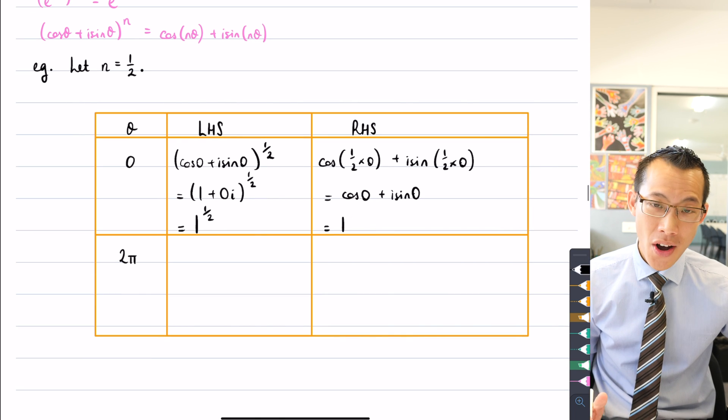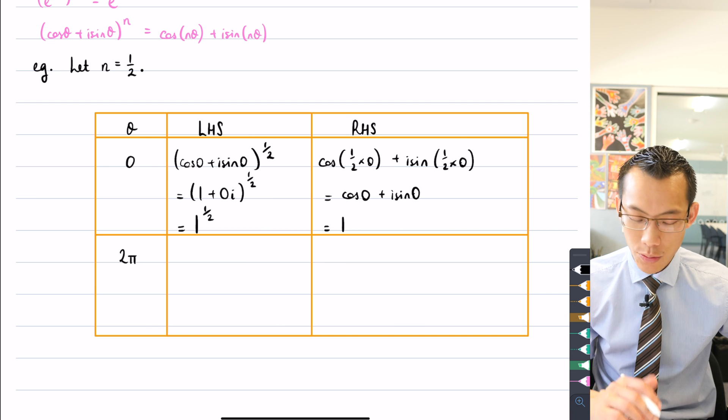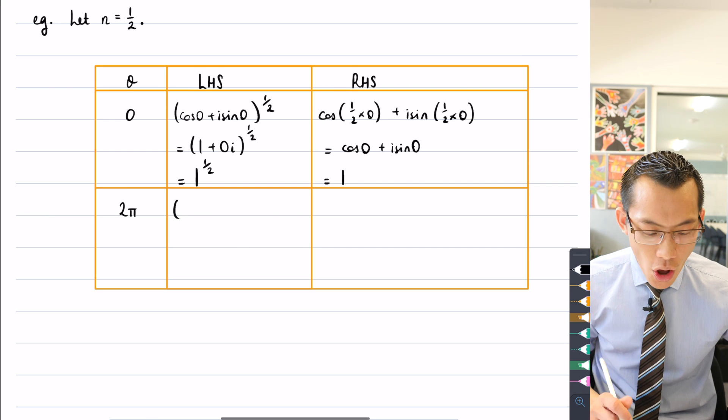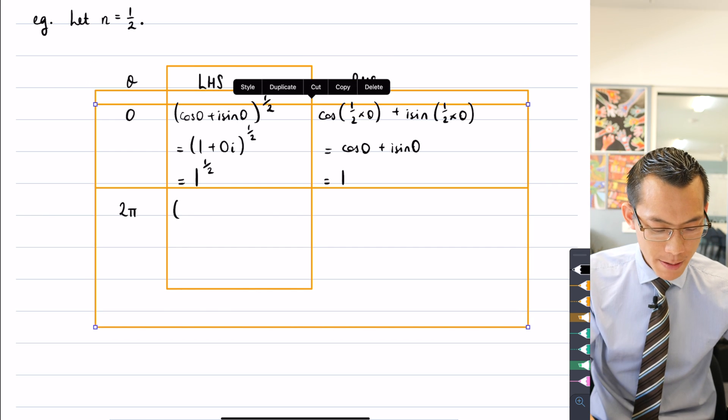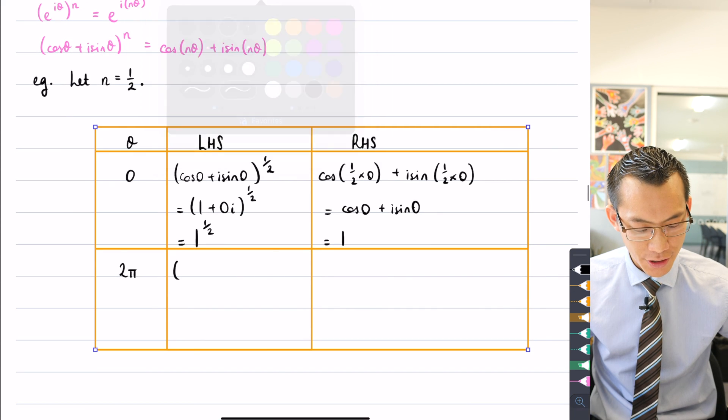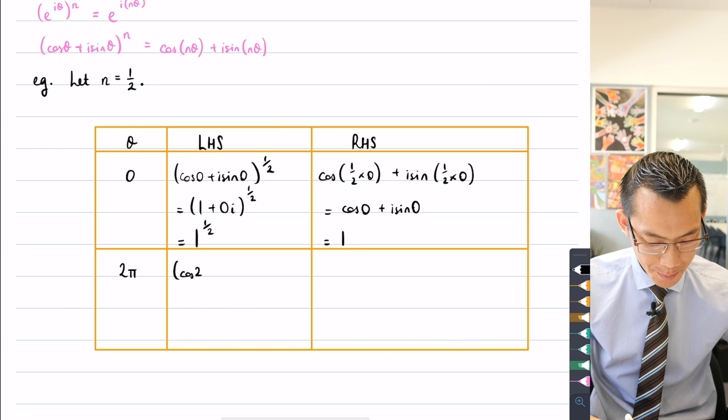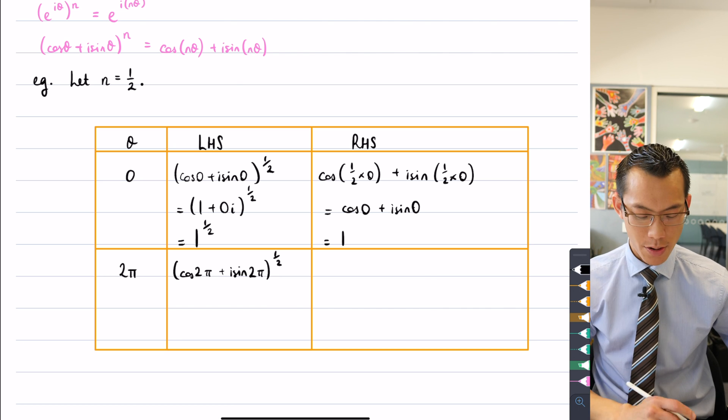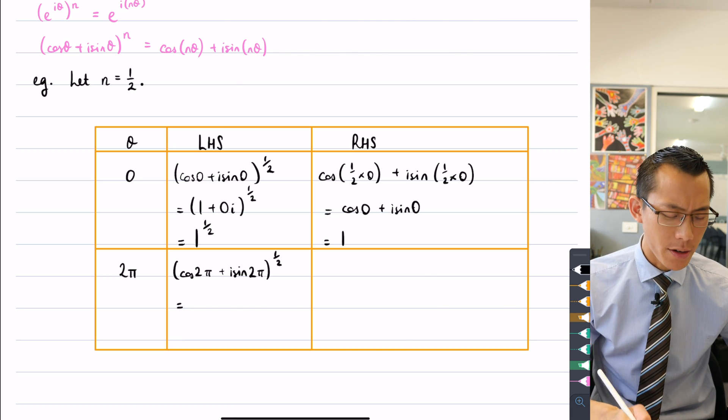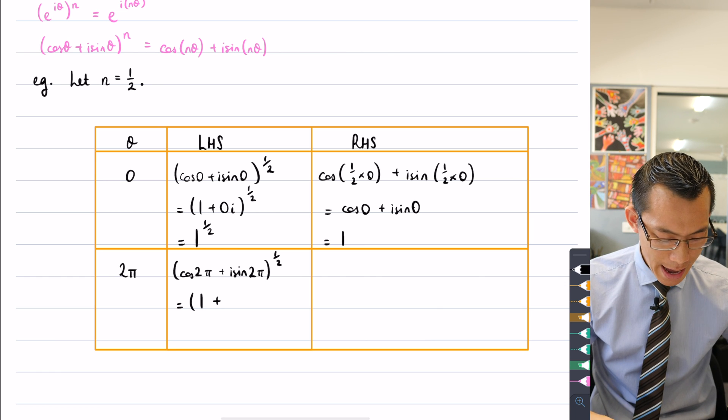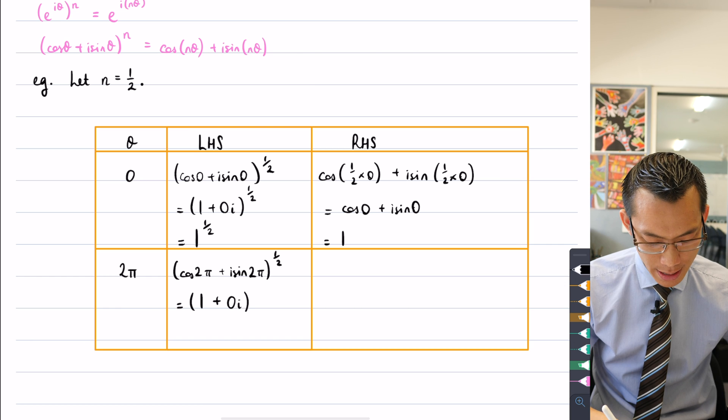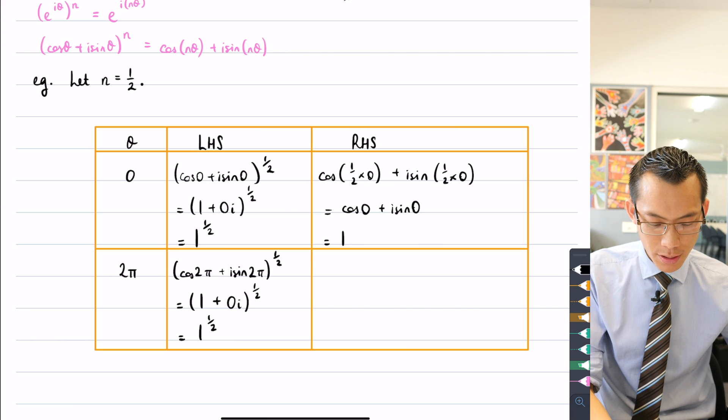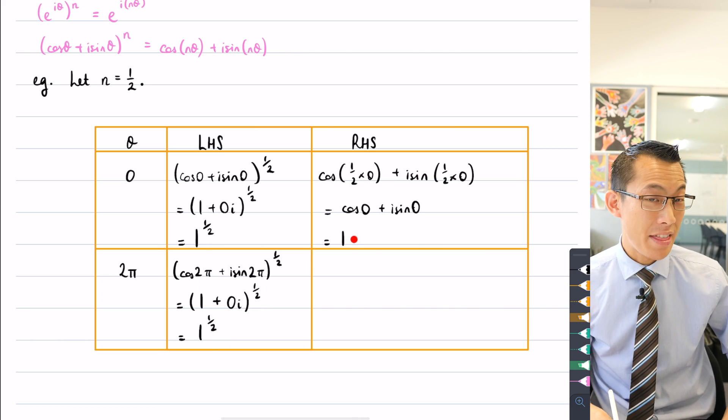But now watch what happens when we try a different value of θ. I'm going to take the same n, n equals a half, and then I'm going to give it a whirl for θ equals 2π. Let's see what happens. On the left-hand side here, I'll keep that pink line in view so that I can quote straight into it. I'm going to get cos of 2π plus i sin of 2π, and that's going to be raised to a half. Still same value of n. This is looking familiar. You know, cos of 2π is still one, and i sin 2π is still zero i, and that's raised to the power of a half. So you're like, what's the big deal? Everything all looks 100% fine. One to the power of a half, one to the power of a half, that's equal to one. But now, here comes the kicker.